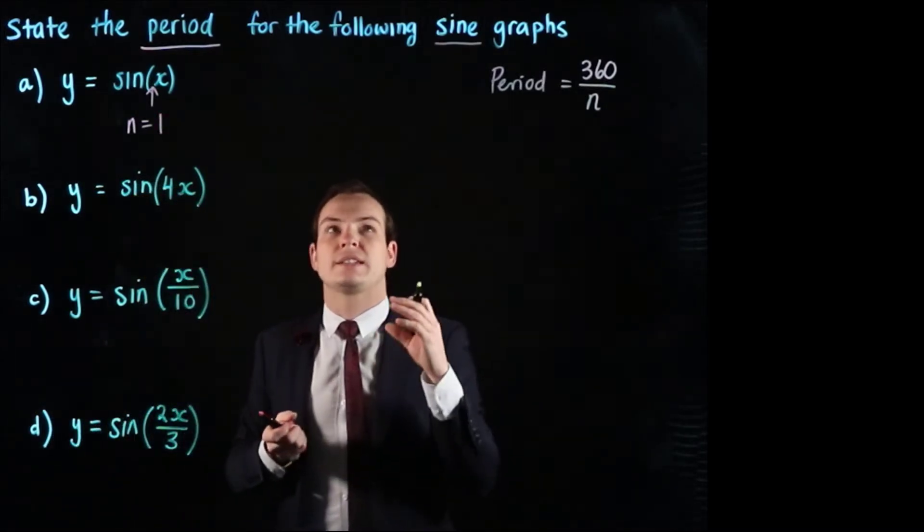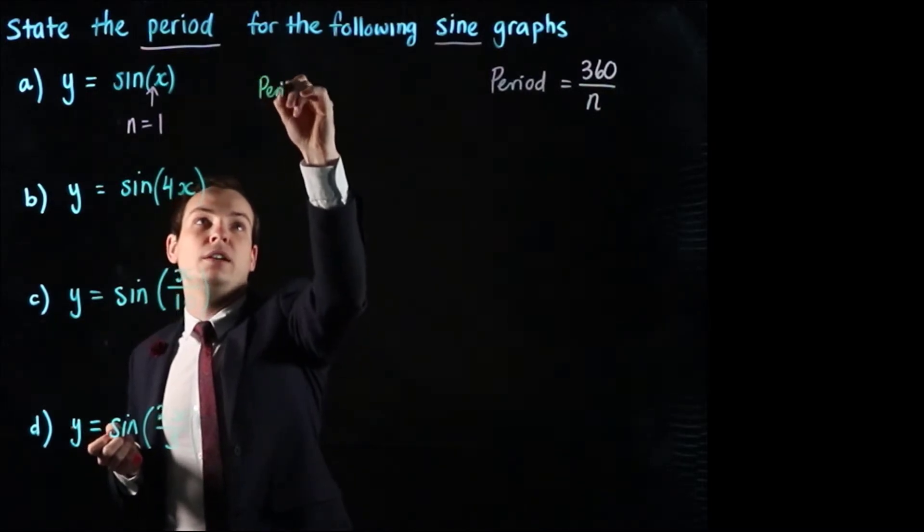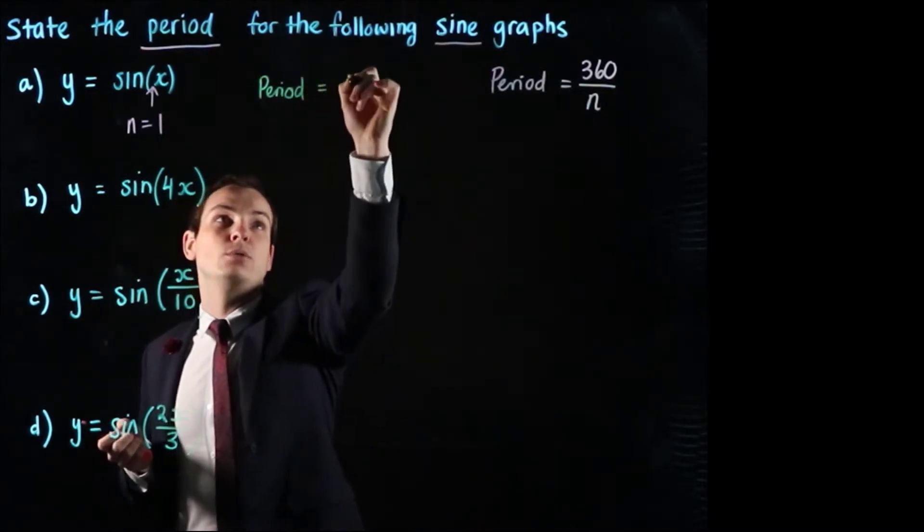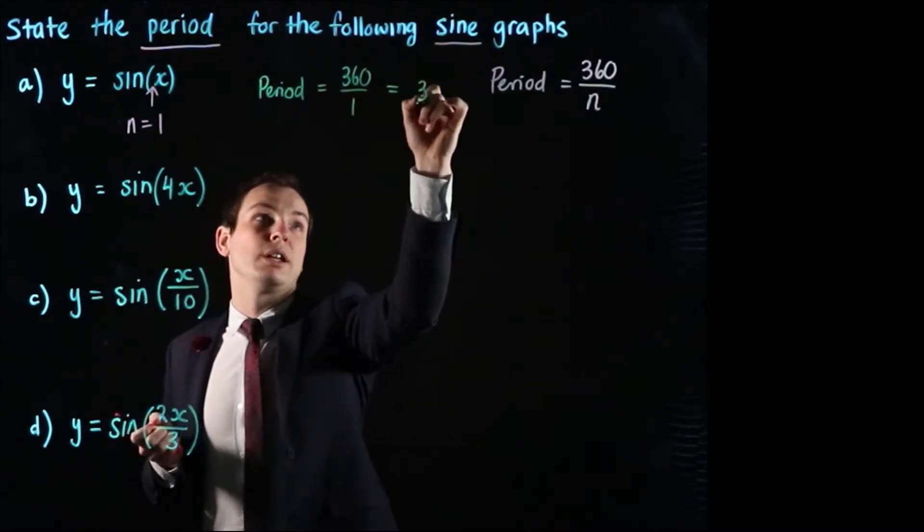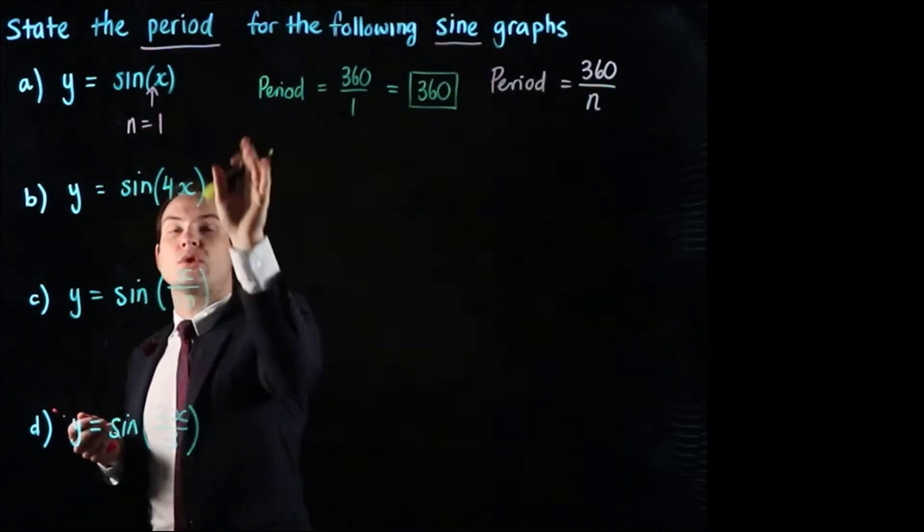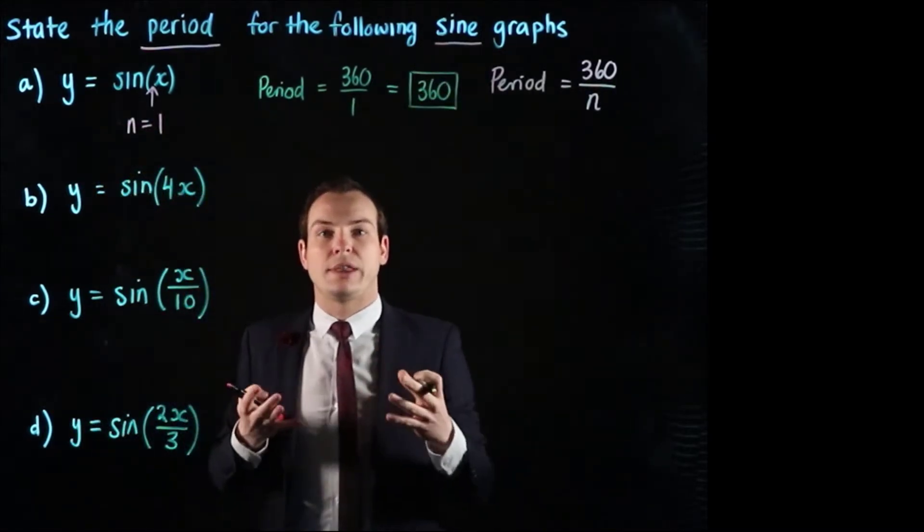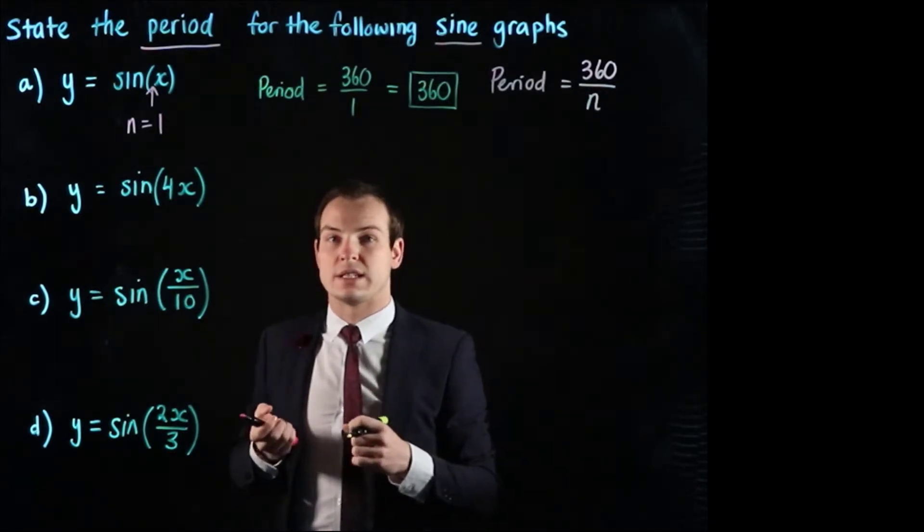So that means when we get to calculating the period of this first one we'll see that the period is equal to 360 over 1 which is simply 360. So that is the period for y equals sine of x. And we'll get the calculator out in a minute and show that that means that one cycle takes 360 degrees.